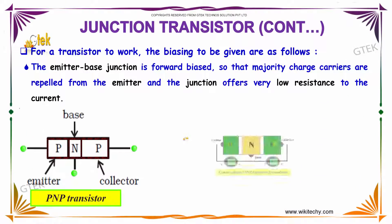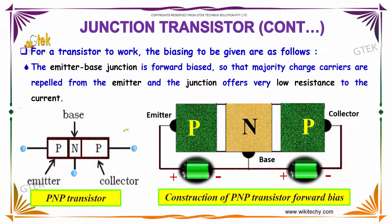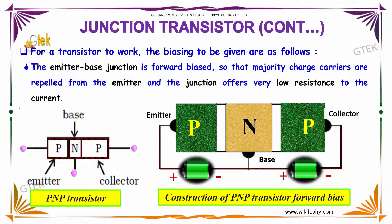For the transistor to work, the biasing must be as follows. The emitter-base junction should be forward biased so that majority carriers are repelled from the emitter, and the junction offers very low resistance to the current.